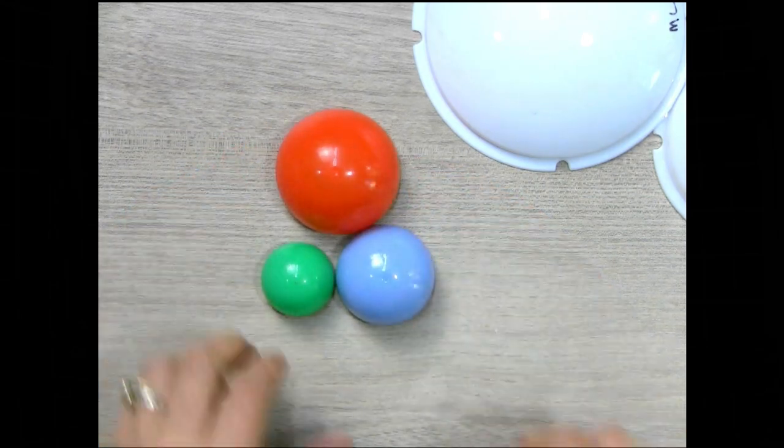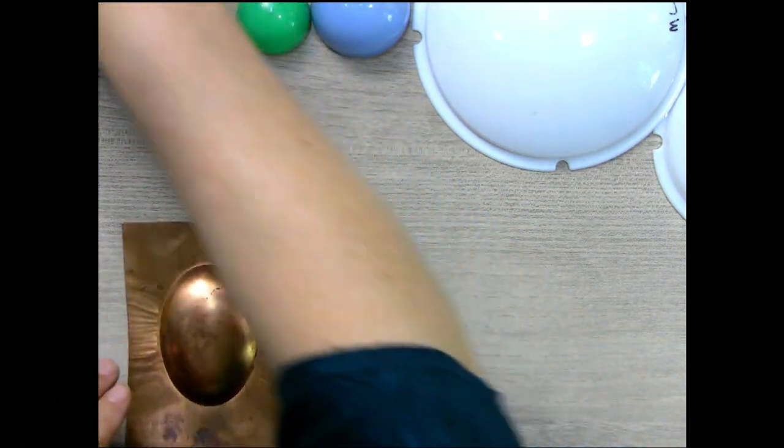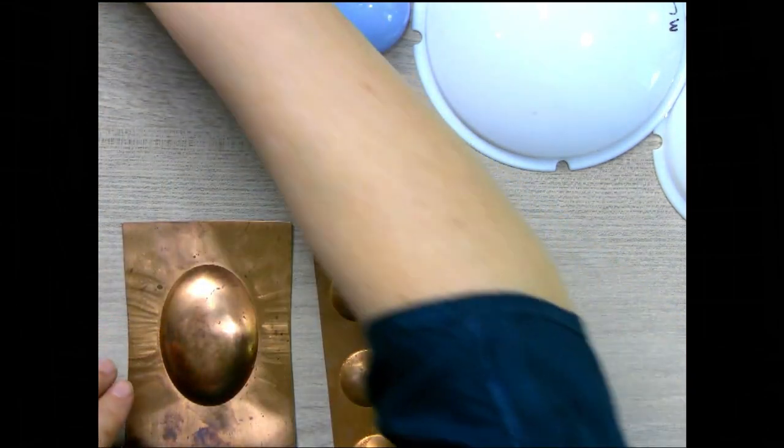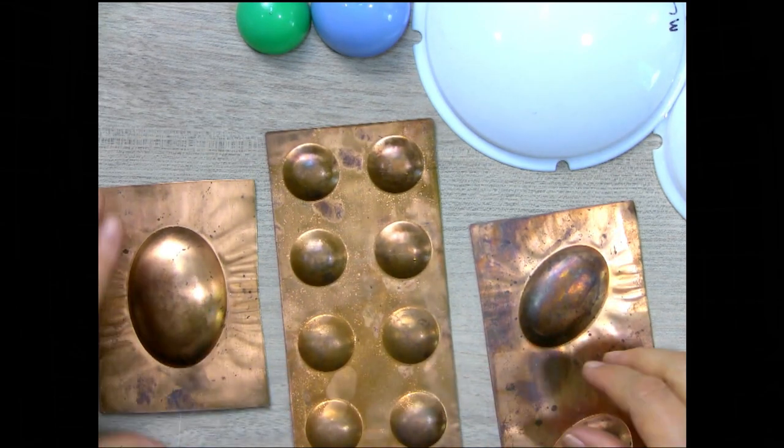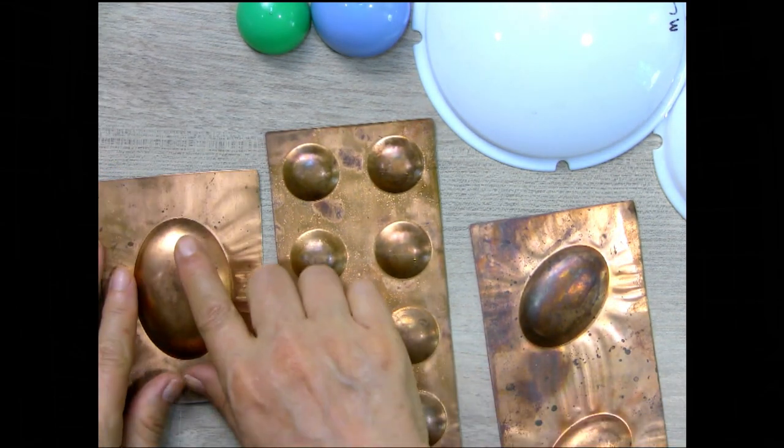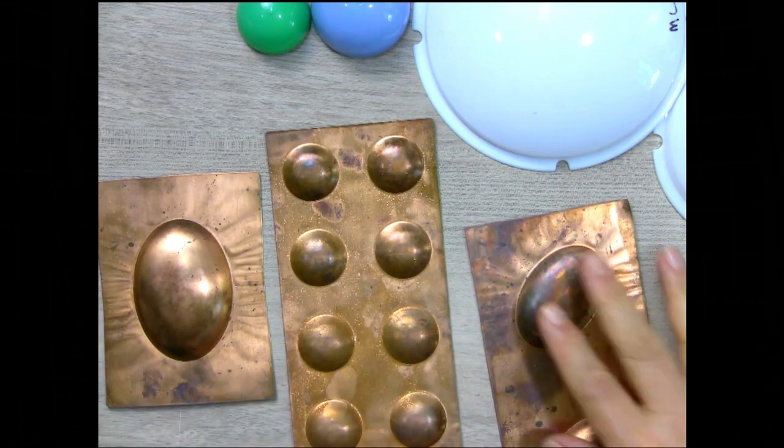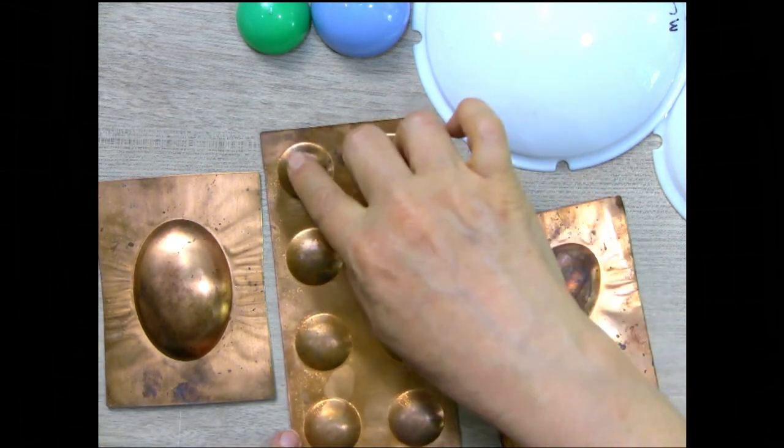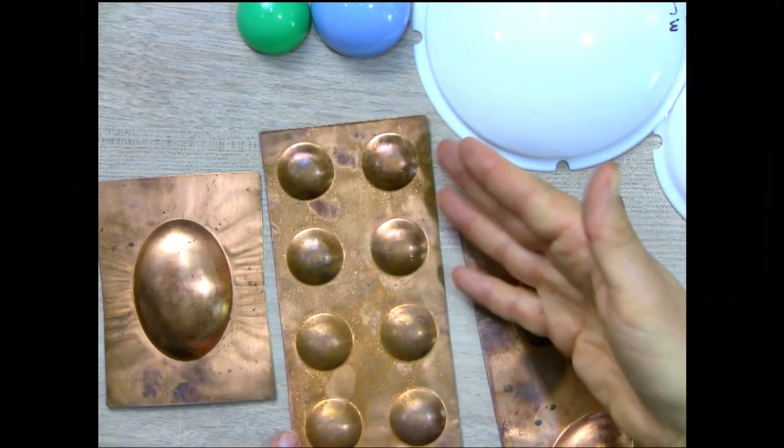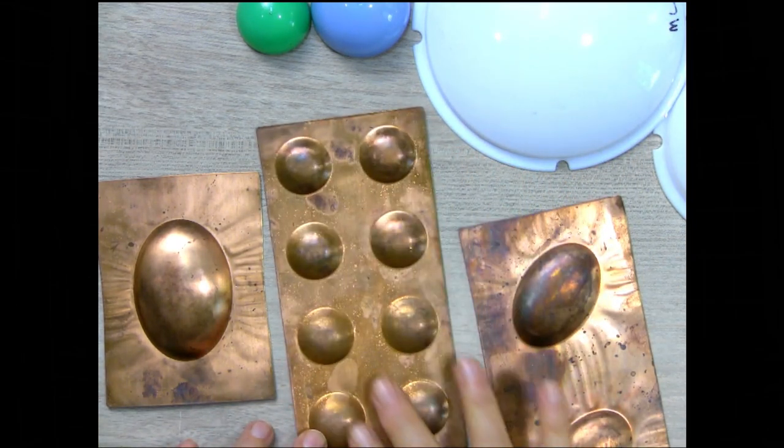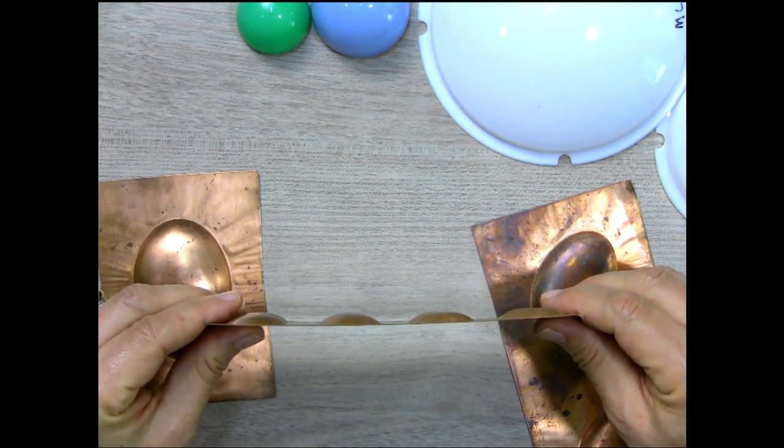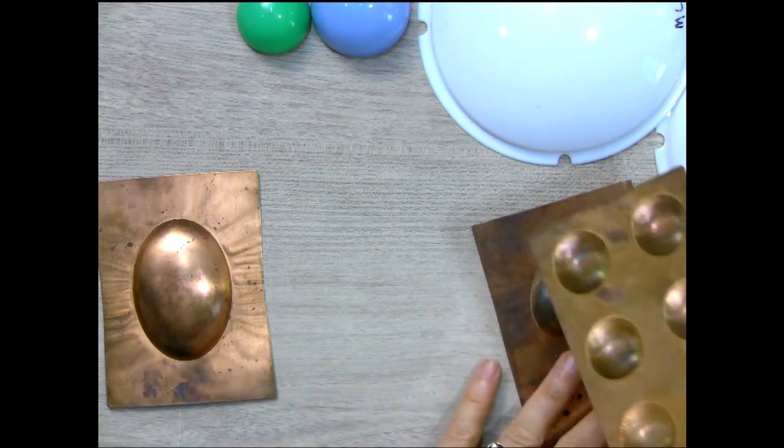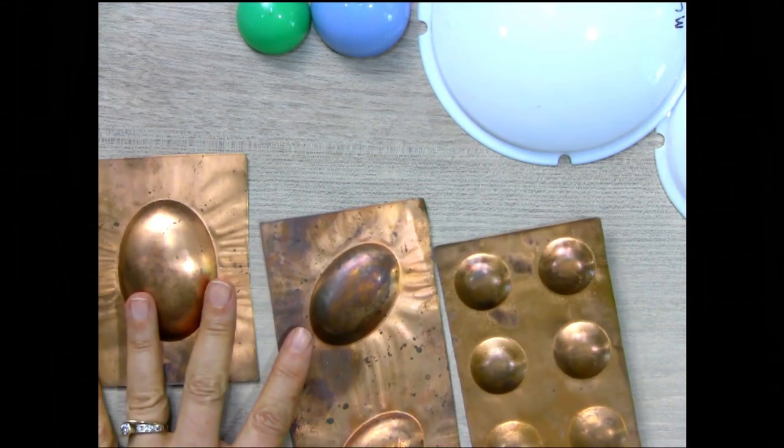I've also seen these copper forms. These are copper molding forms, which you can get. I believe Cool Tools carries these. And so this is nice because it gives me an oval shape. These are some oval shapes. This is nice if I was making, you know, four sets of matching earrings, round earrings, I could use this and it's not too deep. It's a fairly shallow dome. So these are some various options for doming.